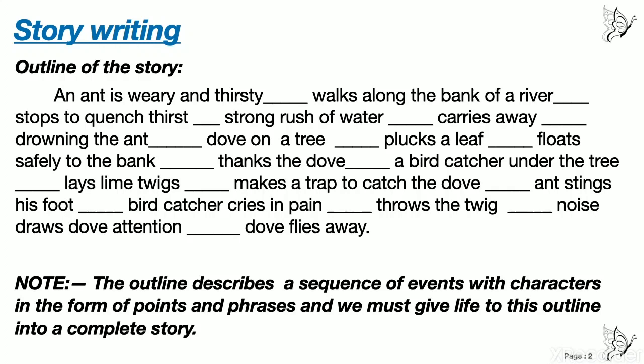Let's see the outline of the story: An ant is weary and thirsty — walks along the bank of a river — stops to quench thirst — strong rush of water — carries away — drowning the ant — dove on a tree — plucks a leaf — floats safely to the bank. A bird catcher under the tree — lays lime twigs — makes a trap to catch the dove — ant stings his foot — bird catcher cries in pain — throws the twig — noise draws dove's attention — dove flies out.